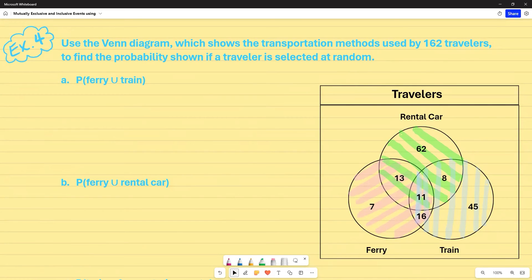So for example four, use the Venn diagram, which shows the transportation methods used by 162 travelers to find the probability shown if a traveler is selected at random. You might want to make it a habit of color coding. That is helpful when you're trying to find your probability. I'm trying to find the probability of a ferry or a train. So what I want to do is look at my circle, the entire circle for the ferry. And I want to add all of those numbers up. That's going to be 47 out of 162, which was given in the word problem. And then the symbol or tells me that I'm using the addition rule. So I'm going to go ahead and add.